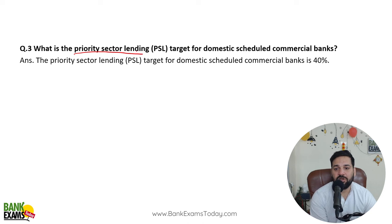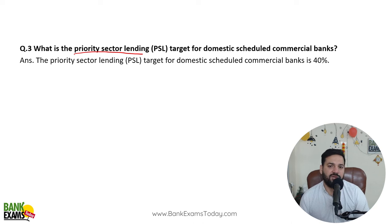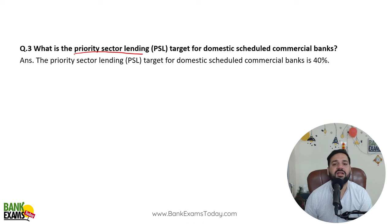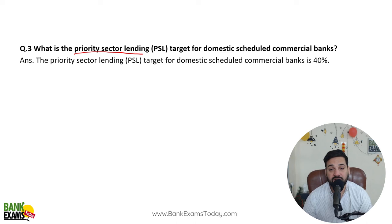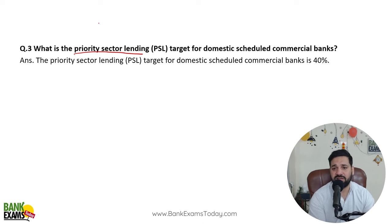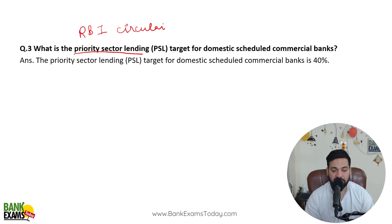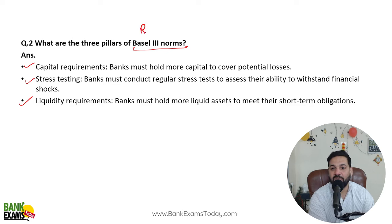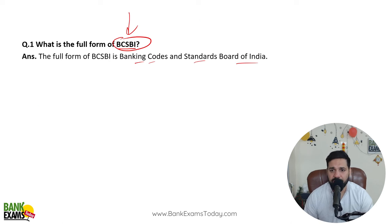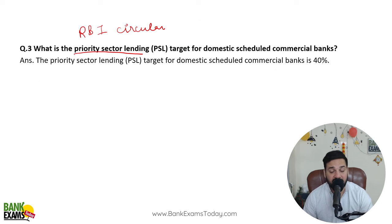Priority sector lending is an important topic. In any exam where banking awareness or financial awareness is a section, priority sector lending is very important. Every year I see priority sector lending in any paper. The commercial banks' target is 40%. There is a 30-minute session available on YouTube as well — study it in depth. You can find one or two questions directly from priority sector lending. It is an RBI master circular, which is updated on a regular basis.